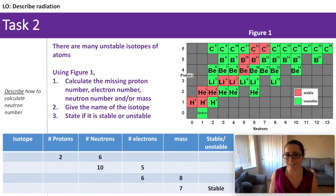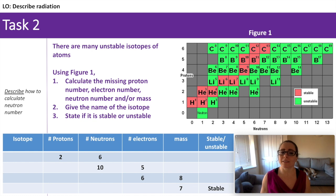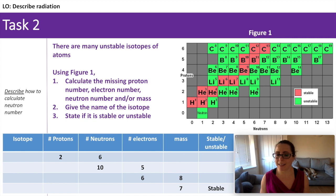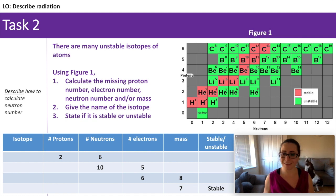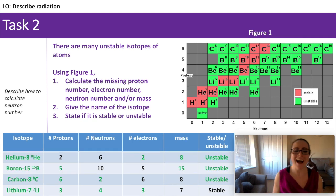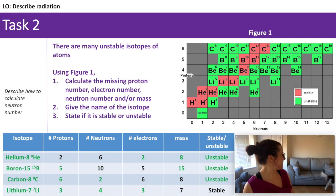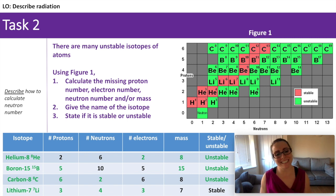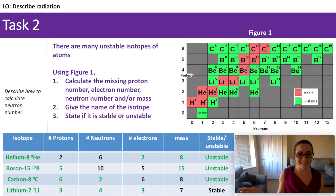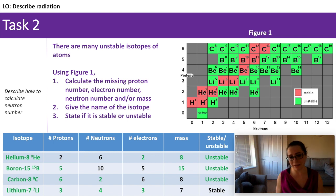Here is another challenge. We've got some information but we've got the isotopes missing. Can you figure out which isotopes we are talking about? The last one will be a little bit tricky — you've got to figure out which isotope is stable with a mass of seven. Pause the video and have a go. Okay, answer time. Lithium is the only stable isotope with a mass of seven, so you'd be able to work backwards to figure out the number of protons, neutrons, and electrons.